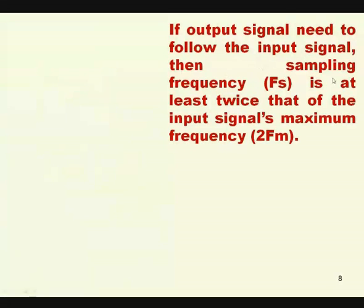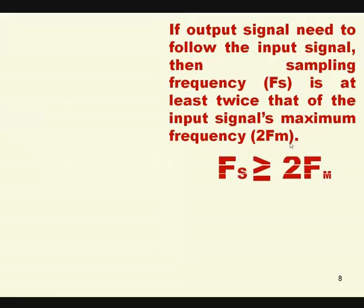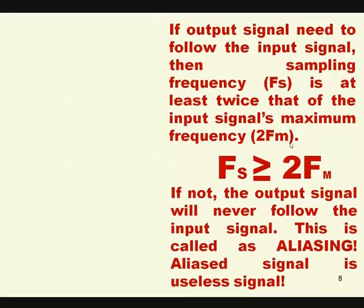So to make the output signal follow the input signal, the sampling frequency must be at least twice that of the input signal's maximum frequency. You have studied this in Signals and Systems: fs ≥ fm. The purpose of introducing fs ≥ fm is to reconstruct the input signal at the output. If fs is not greater than or equal to fm, the output signal will never follow the input signal — this is called aliasing. Aliasing signal is a useless signal.